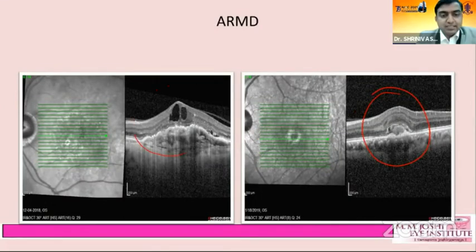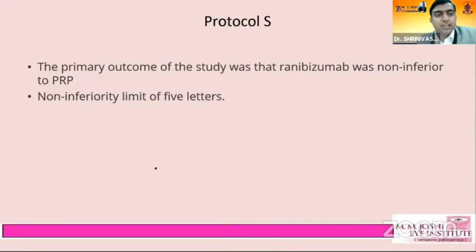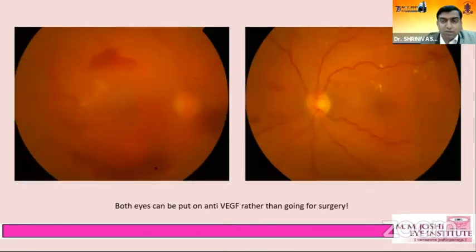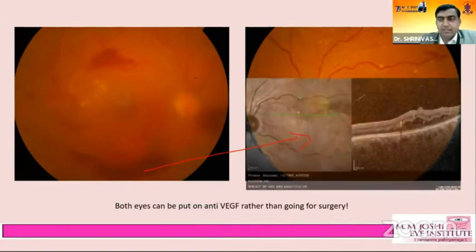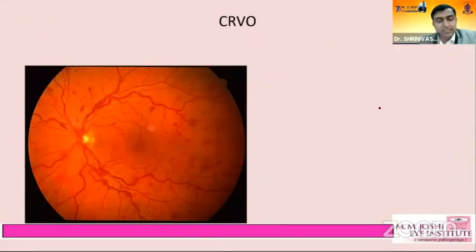In occult CNVM cases not responding to Ranibizumab, switching to Aflibercept or Brolucizumab gives a good response. For proliferative diabetic retinopathy with mild vitreous hemorrhage, anti-VEGF rather than surgery is an option — Protocol S confirms Ranibizumab was non-inferior. This patient had bilateral PDR with macular edema; there was slight clearing of the vitreous hemorrhage but it recurred and eventually required vitrectomy and laser.